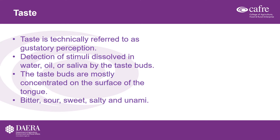Taste is a chemical sense, technically referred to as gustatory perception. Basically, it involves the detection of stimuli dissolved in water, oil or saliva by the taste buds. The number of taste buds varies from person to person, and one of the major factors that impacts that is age. As infants we have somewhere between eight to ten thousand taste buds; as adults between four to six thousand; and in elderly years somewhere between two to three thousand. So there is some scientific basis for why elderly people often say it doesn't taste like it used to.